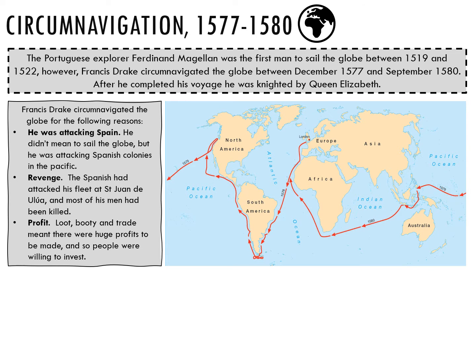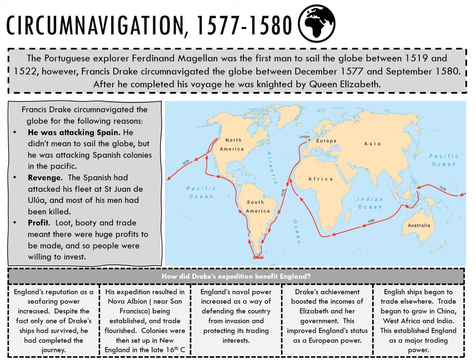This is the map showing Drake's route around the globe between 1577 and 1580. England's reputation as a seafaring power increased — in spite of the fact that only one of Drake's five ships, the Golden Hind, survived the voyage, Drake had overcome considerable difficulties in sailing around the globe. His expedition resulted in Nova Albion, an area near San Francisco, being claimed as English territory with Elizabeth as its queen.